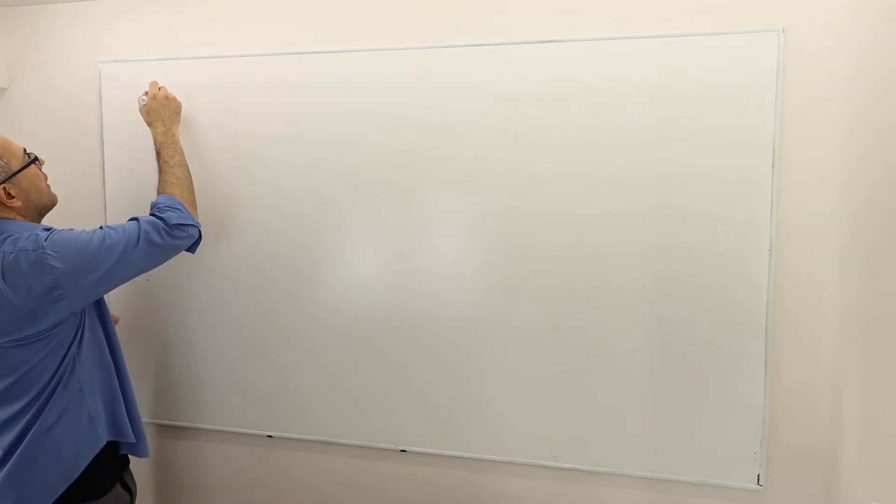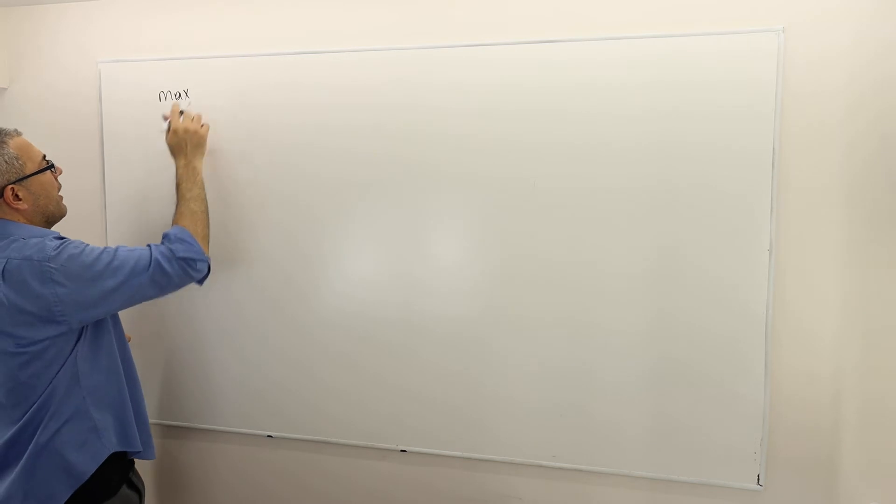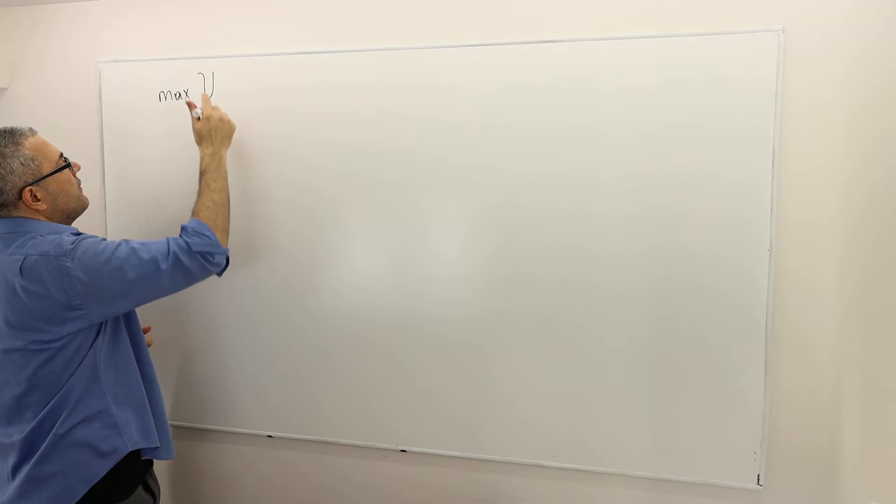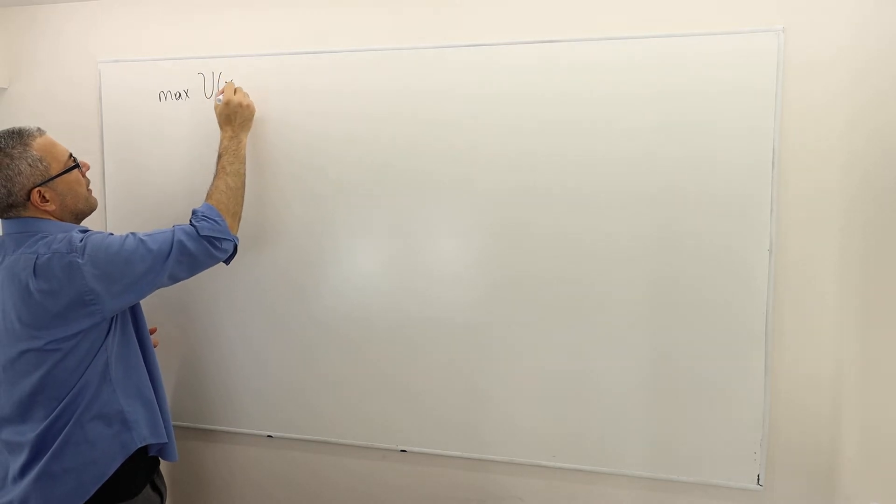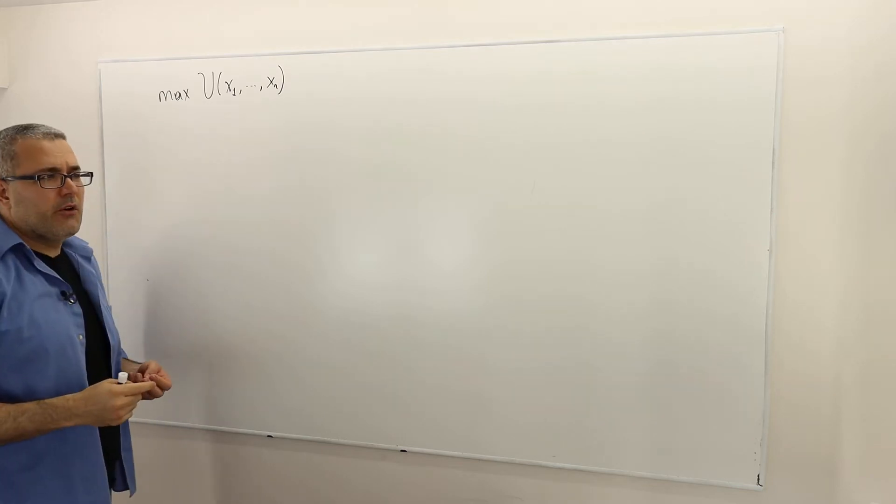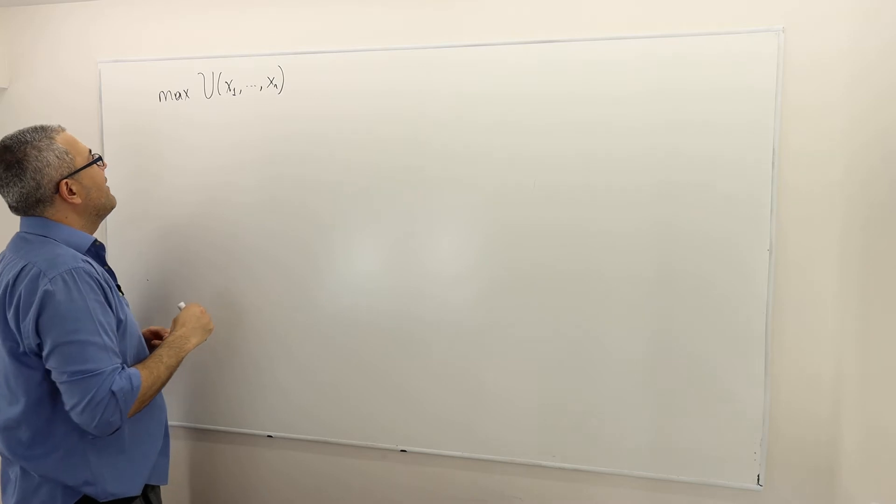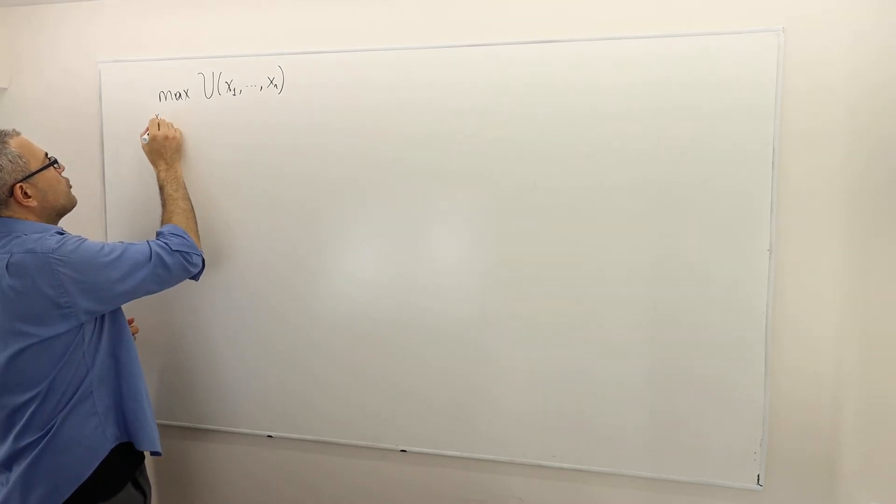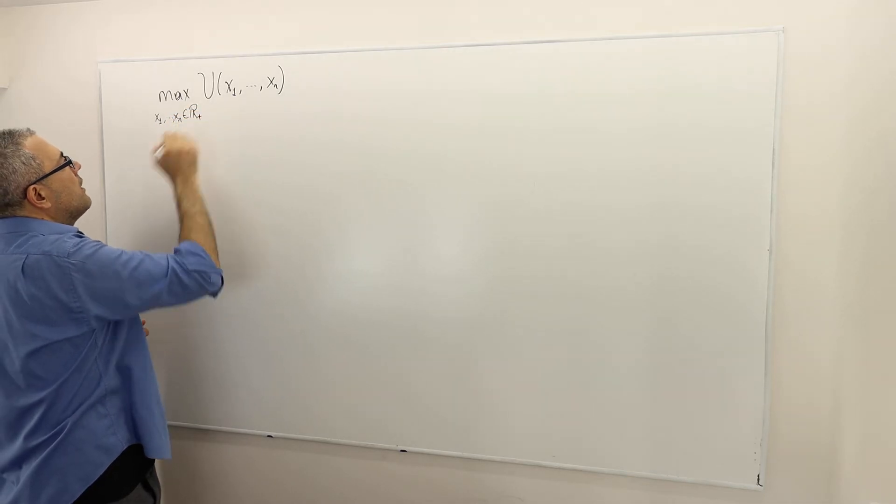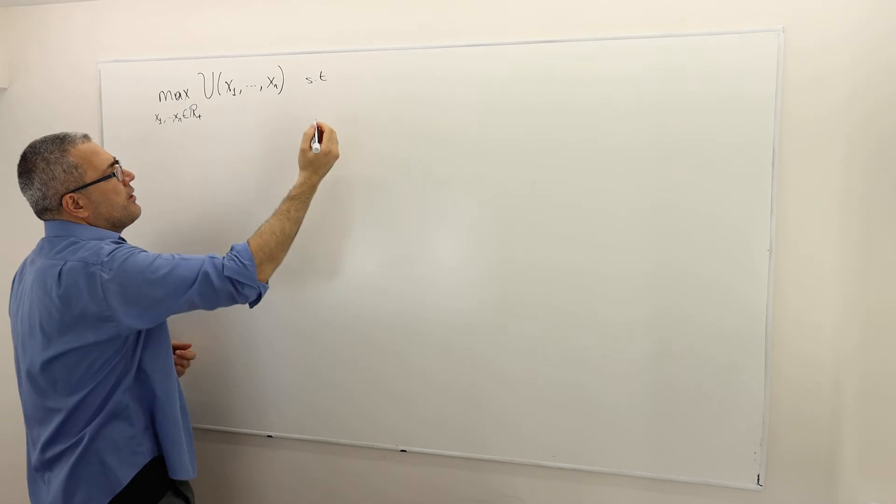So here is our problem: maximize the utility function subject to the budget constraint. What is the utility function? We assume that there are more than one good. Instead of denoting them x, y, z, t, etc., I'm going to denote them x1, x2 up to xn. So therefore our choice variables are x1 all the way up to xn, and they all are non-negative real numbers, subject to our budget constraint.